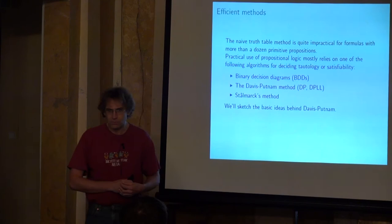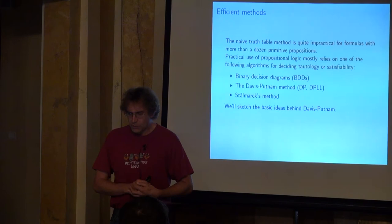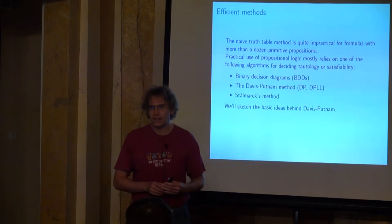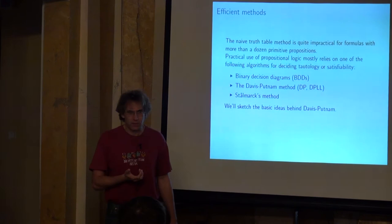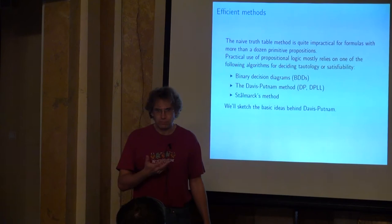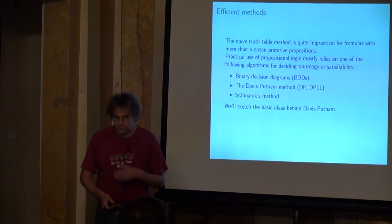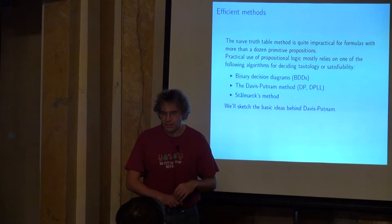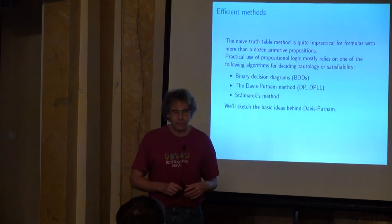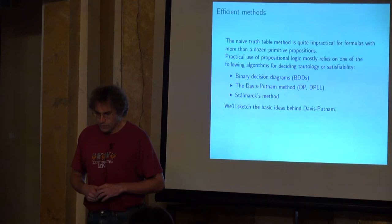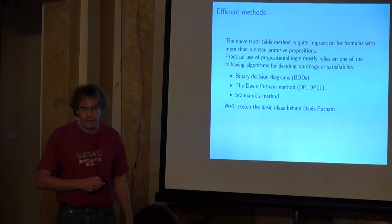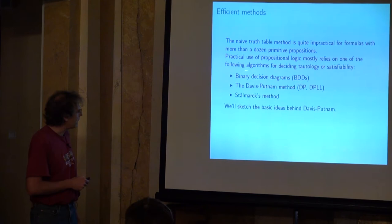Since SAT is now quite interesting, what about the algorithms for solving it? The naive method is truth tables: if you have a propositional formula with N atomic propositions, you consider all 2^N possible arrangements of true and false. That's clearly exponential and not practical for large instances. Nowadays people normally use some variant of one of the following: binary decision diagrams (BDDs), the Davis-Putnam algorithm — or strictly speaking the DPLL algorithm — and its recent derivatives, or Stålmarck's method.